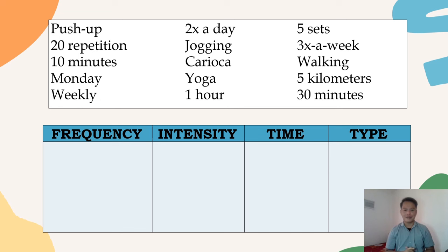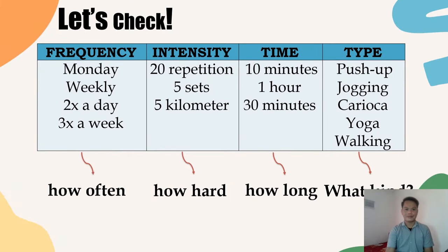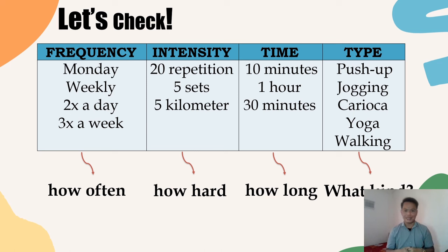Here are the different items that you have to input on the table. Let's check if you got it right. For frequency, we have Monday, weekly, two times a day, and three times a week, because this refers to how often you perform such activity.